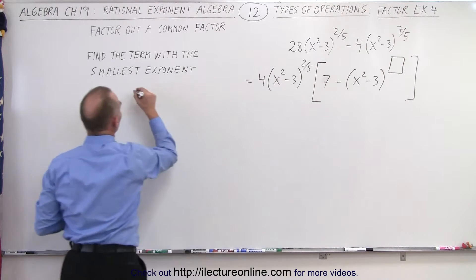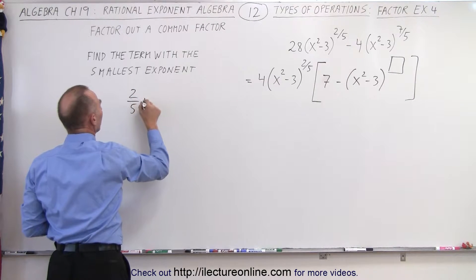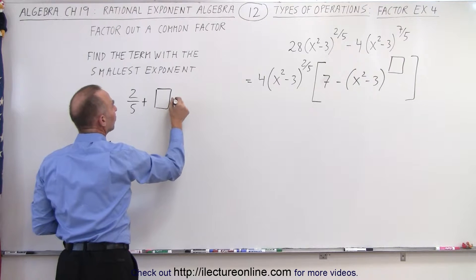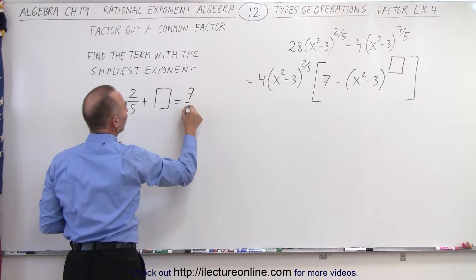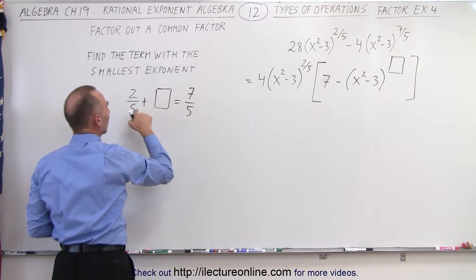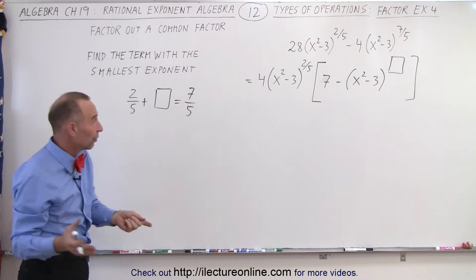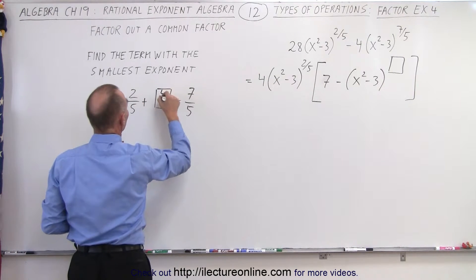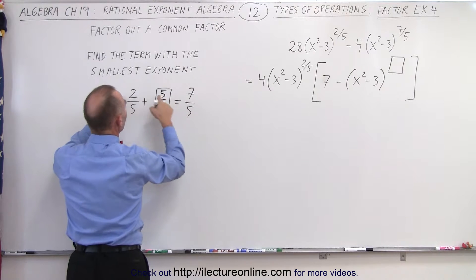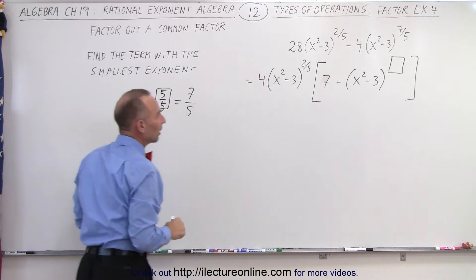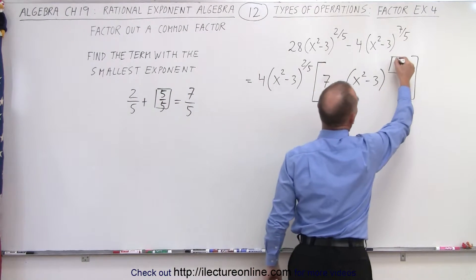So in other words, 2 fifths plus some unknown exponent will give me 7 fifths back. And so what goes in here so that this plus this gives me 7 fifths? And the answer, of course, is 5 fifths. 5 over 5 because 2 plus 5 is 7, and the common denominator of 5. So we want 5 fifths over here.